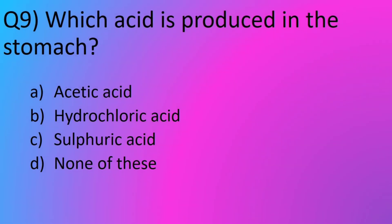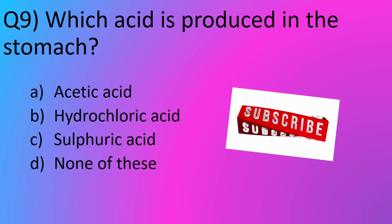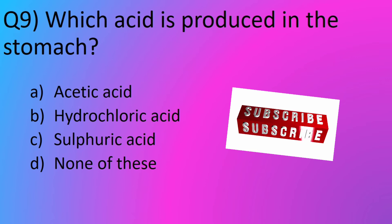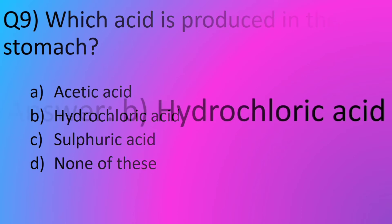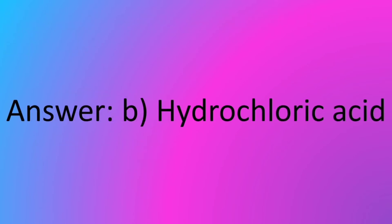Question No. 9: Which acid is produced in the stomach? Option A: Acetic acid. Option B: Hydrochloric acid. Option C: Sulphuric acid. Option D: None of these. The answer is Option B: Hydrochloric acid.